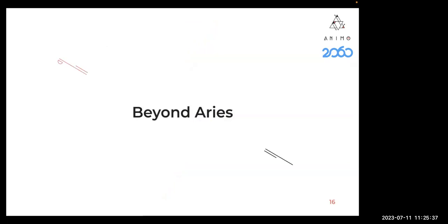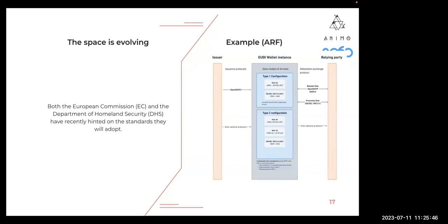The next section is about 'beyond Aries.' We've started implementing protocols outside the typical Aries ecosystem. The space is evolving - recently both the European Commission and the Department of Homeland Security have hinted at the standards they will adopt, and they are not all Aries-related. The EU Architecture Reference Framework (ARF) shows credential formats including mdoc (ISO standard for proximity flows), W3C Verifiable Credentials, and SD-JWT variants for remote flows.